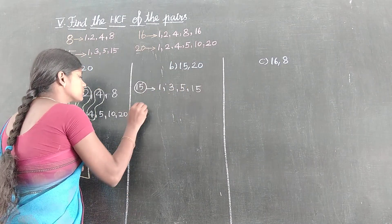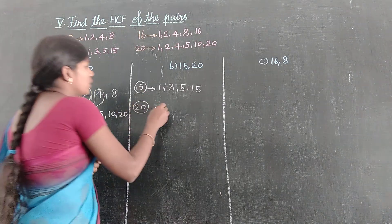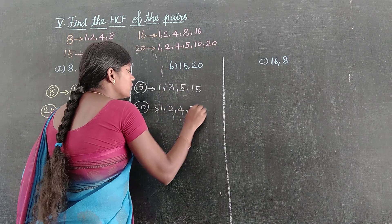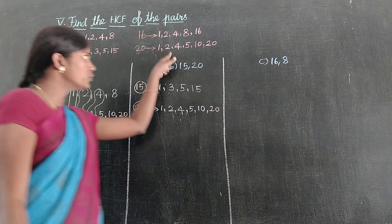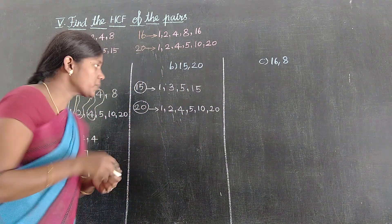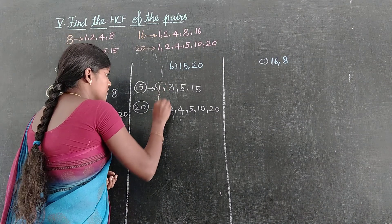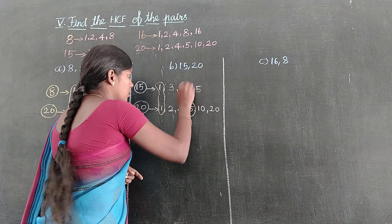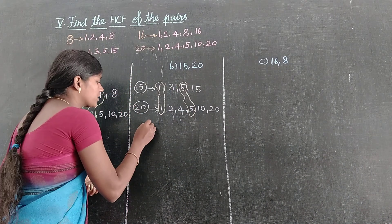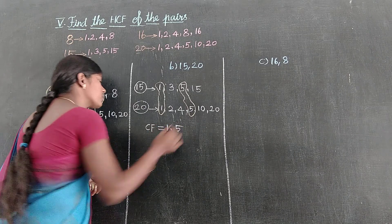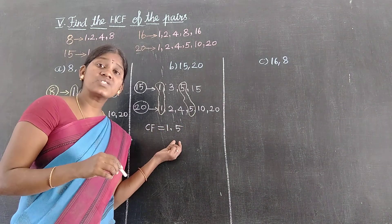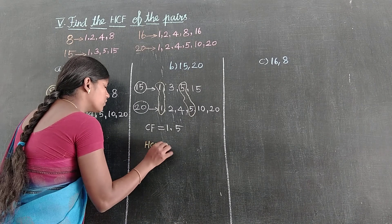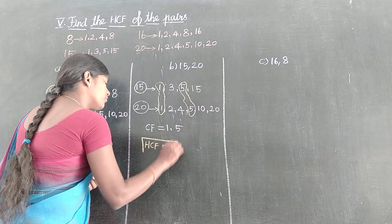And next, 20: 1, 2, 4, 5, 10 and 20. So if the regular formula is 1, 1 is the common factor. And 2, here, here. Next, 5. 5 is the common factor. So the common factor CF equals 1 and 5. You raise the highest number: 5. 5 is the HCF of 15 and 20. So HCF equals 5.